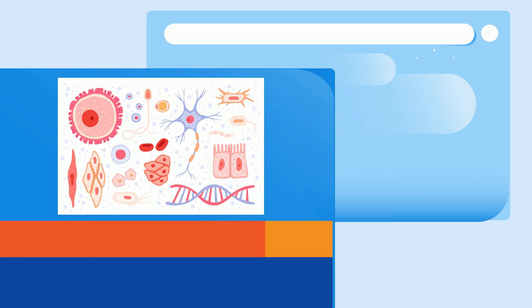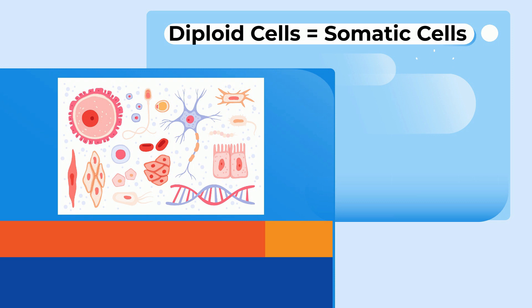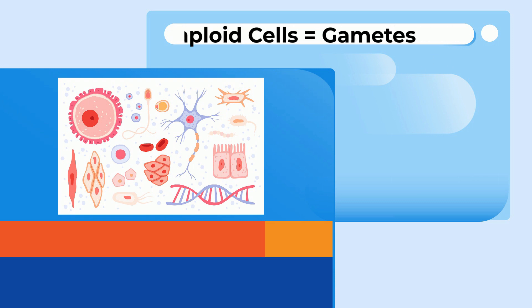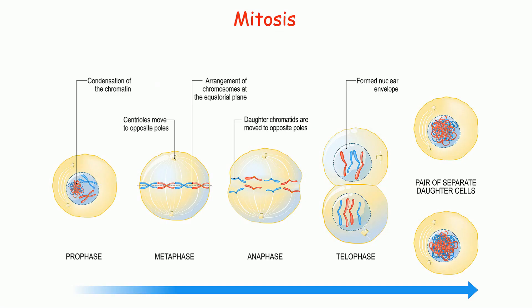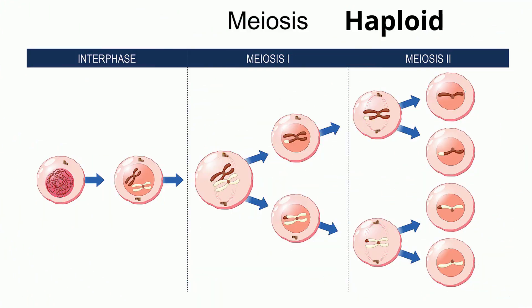Diploid cells are found in somatic cells — remember, these are cells of the body. And haploid cells are found in gametes, or your egg or sperm. Diploid cells are created by mitosis, and haploid cells are created by meiosis.